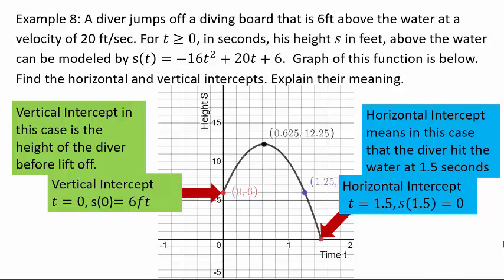So again, look very carefully. When the output is 0, that's the horizontal intercept. When the input is 0, that's our vertical intercept. Two concepts here: horizontal intercept, output 0; vertical intercept, input 0. Just remember that.